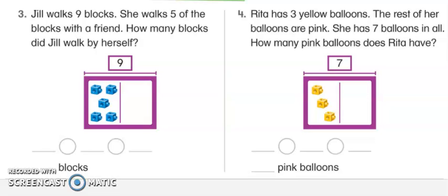Jill walks nine blocks. Okay, so we look at the picture and it's telling us that this is the whole number of blocks that she walked. She walks five of the blocks with a friend. So there goes the five. How many blocks did Jill walk by herself? So we're going to figure out one part of the whole. That's how I want you to see it. This number is the whole, everything that she walked. This is one part and this is another part.